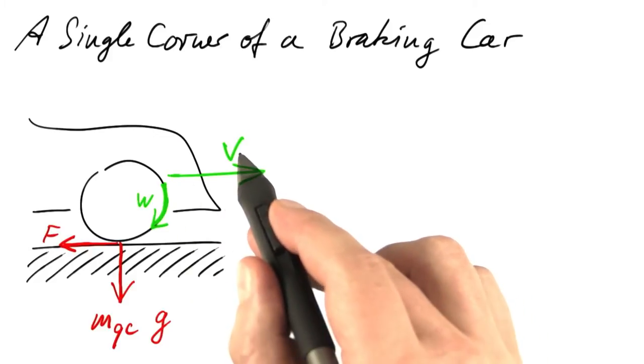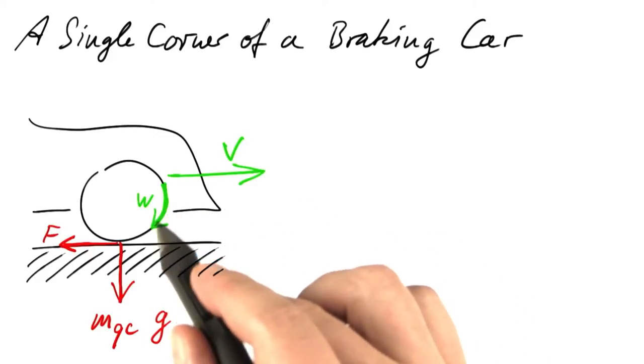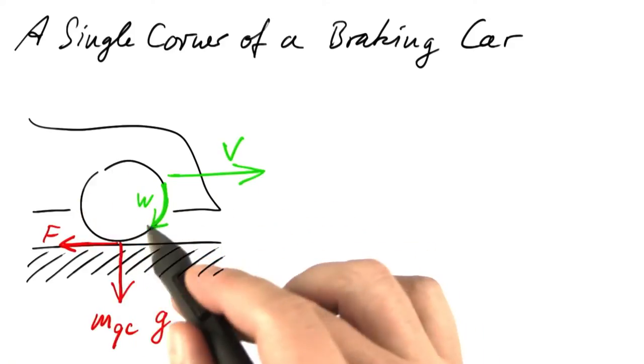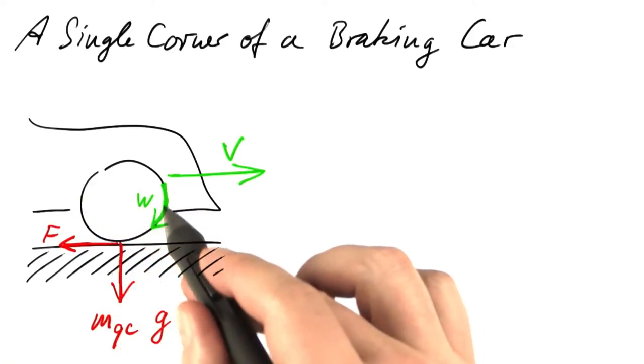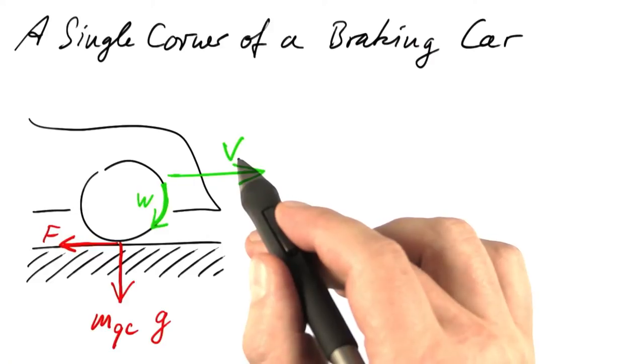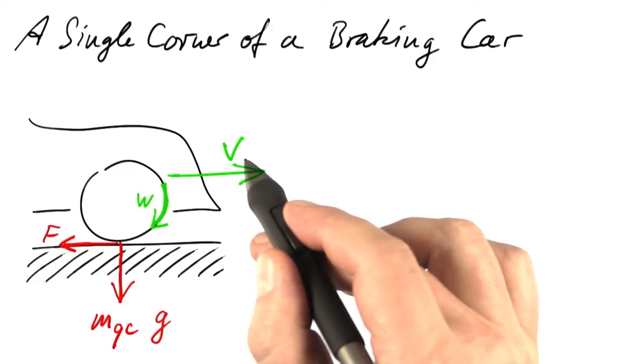That's called the velocity of the car, V, and the velocity of the rim of the wheel, W. So we specify the velocity of the wheel in meters per second, similar to how we specify the velocity of the car.